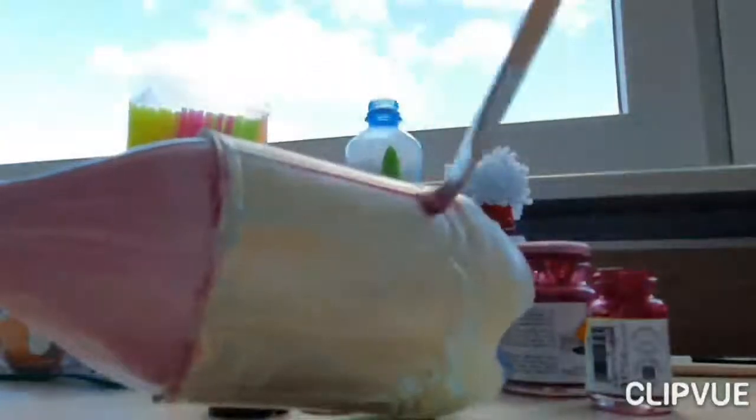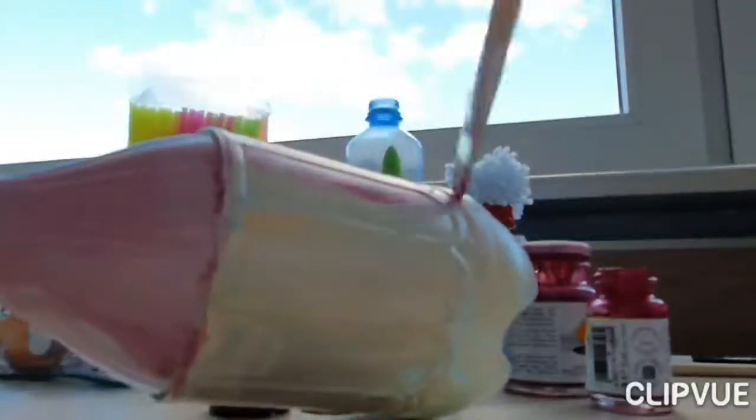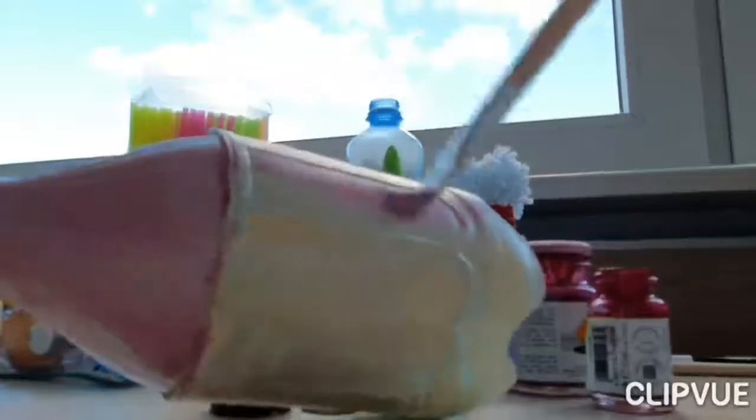For painting, at first we put a white layer to make the color more saturated. After, we put a second pink layer.